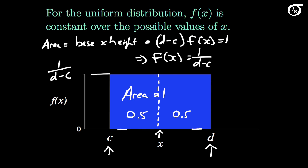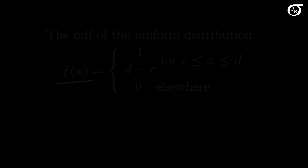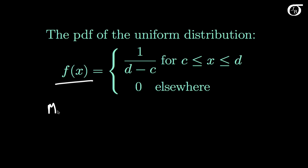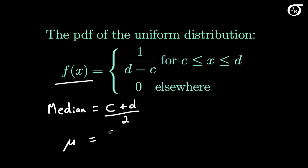And since this is a symmetric distribution, the mean and median are equal. So the mean and median are both equal to the midpoint between c and d. The median is simply c plus d over 2, and the mean mu is also equal to that — just the average of c and d.